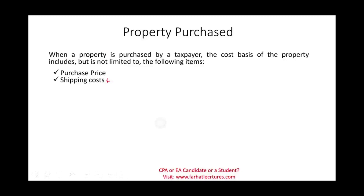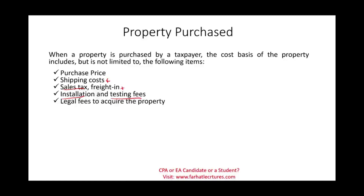Additional items included in the cost basis are: sales tax, since the seller won't sell without it; freight-in, essentially the same as shipping; installation and testing costs, because the asset isn't ready for its intended use without these; legal fees to close the paperwork; excise taxes if imported from overseas; and recording fees to officially register the property in your name. All of these are added to the cost of the property.